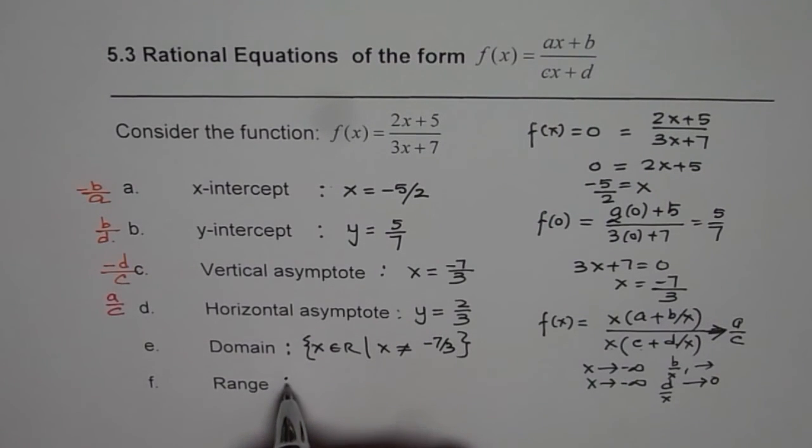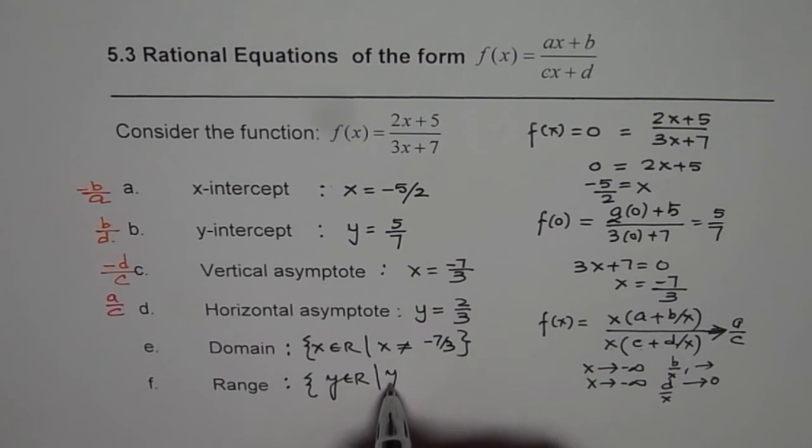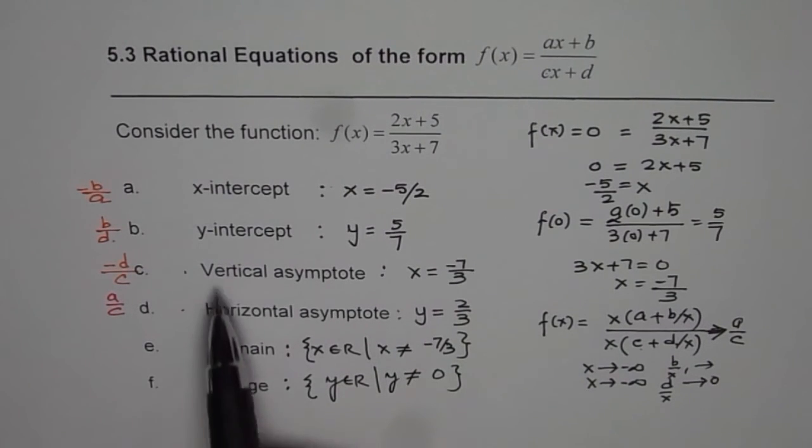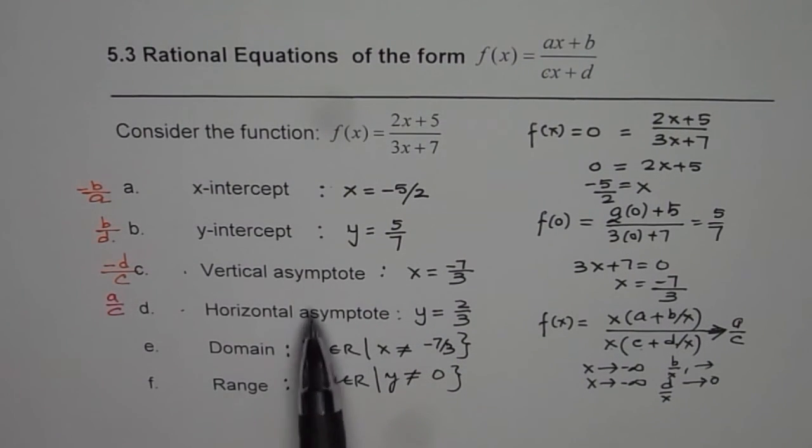And as far as the range is concerned, y belongs to real numbers, but y is not equal to 2 over 3, since that is our horizontal asymptote. So vertical and horizontal asymptotes directly relate to domain and range for the function.